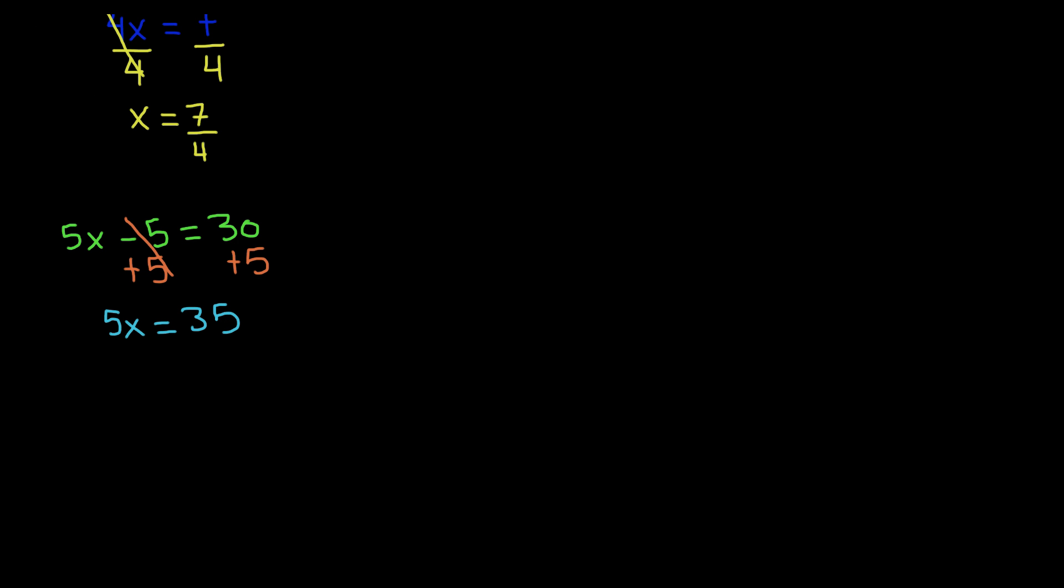So now that I've done the addition and subtraction, we can go ahead and do the multiplication and division. So in this case, x is being multiplied by 5, so we're going to divide by 5 on both sides.